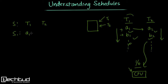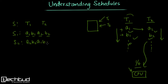When T1 is followed by T2, the schedule is A1, B1, then A2, B2. Similarly, we can have T2 followed by T1, giving A2, B2, then A1, B1. These are examples of serial schedules.